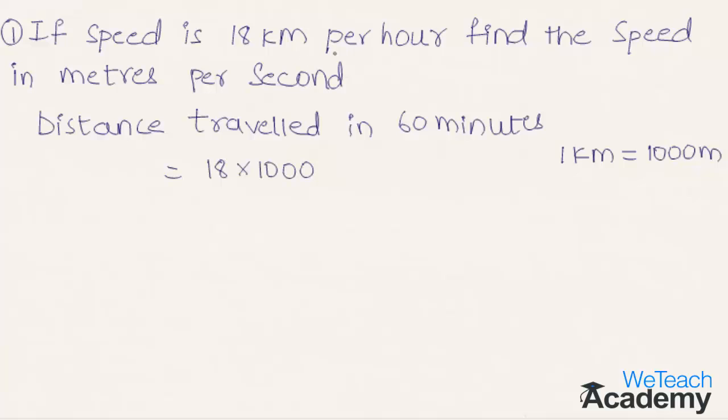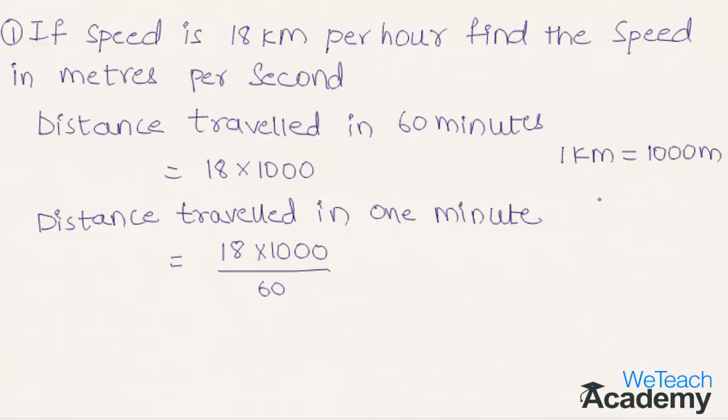As we have to find the speed in seconds, let us convert the hours into first minutes and then into seconds. The distance traveled in 1 minute would be the distance traveled in 60 minutes, that is 18 into 1000 meters, divided by 60. As we know, in 1 hour there are 60 minutes.